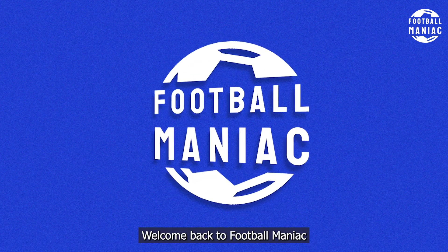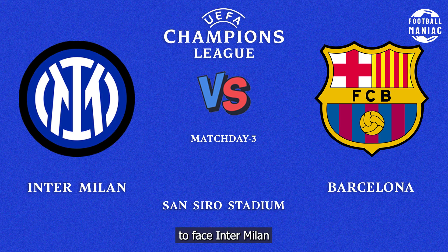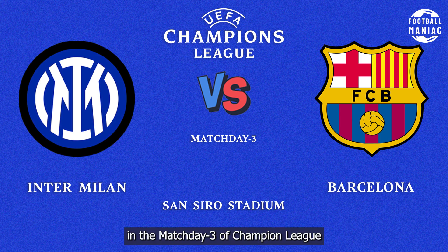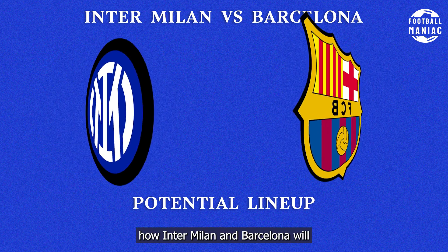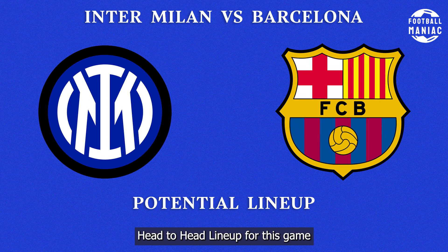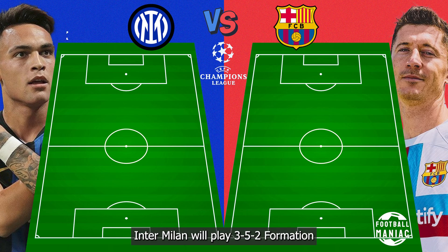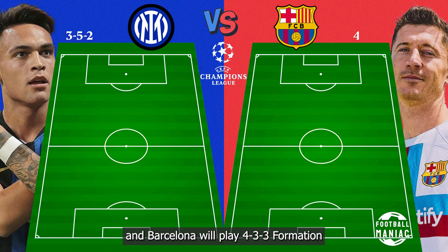Hi guys, welcome back to FootballManiac. Barcelona will travel to San Siro Stadium to face Inter Milan in matchday 3 of Champions League. In this video, I would like to predict how Inter Milan and Barcelona have to lineup for this game. Inter Milan will play 3-5-2 formation, and Barcelona will play 4-3-3 formation.